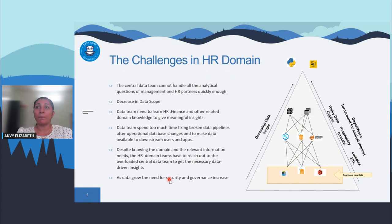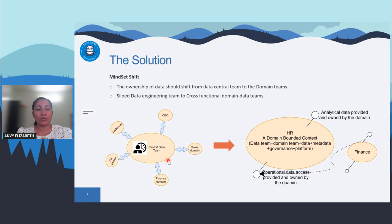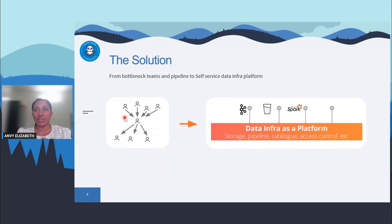The solution is a real mindset shift: ownership of data should move from a central data team to decentralized domain teams — like an HR domain and a finance domain. The HR domain becomes a bounded context where they own their operational data and their analytical data. There also needs to be a shift from bottleneck data pipelines to self-service data platforms that can be easily accessed by any users without complexity.